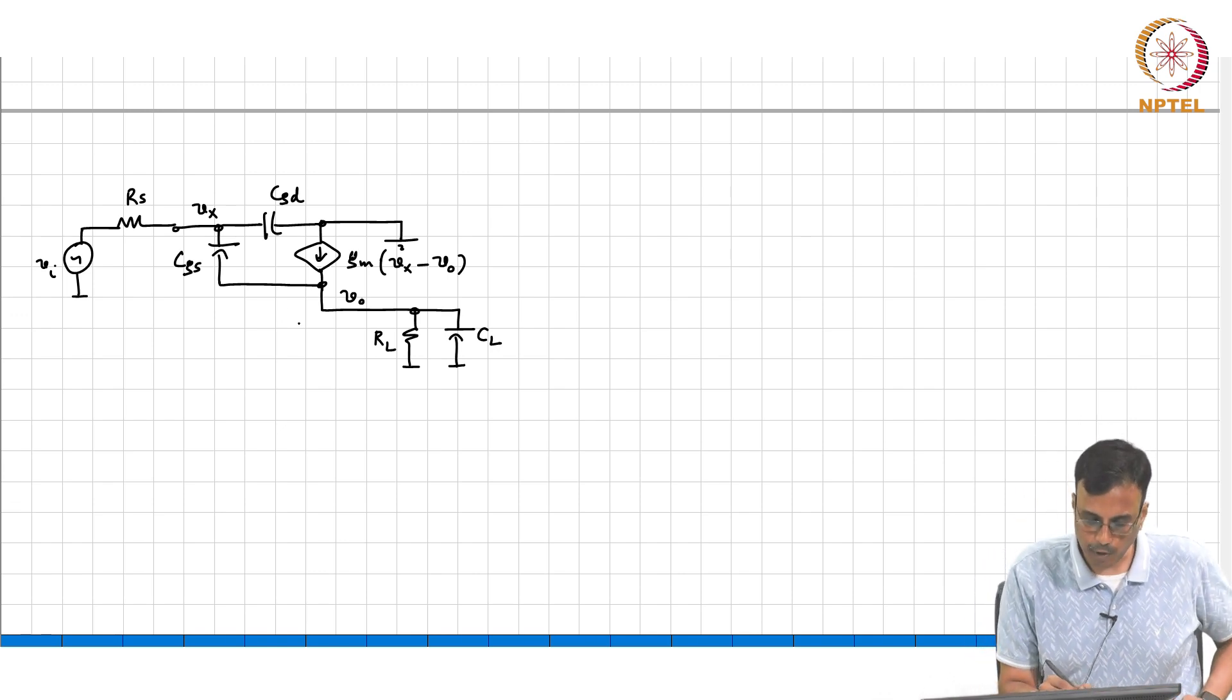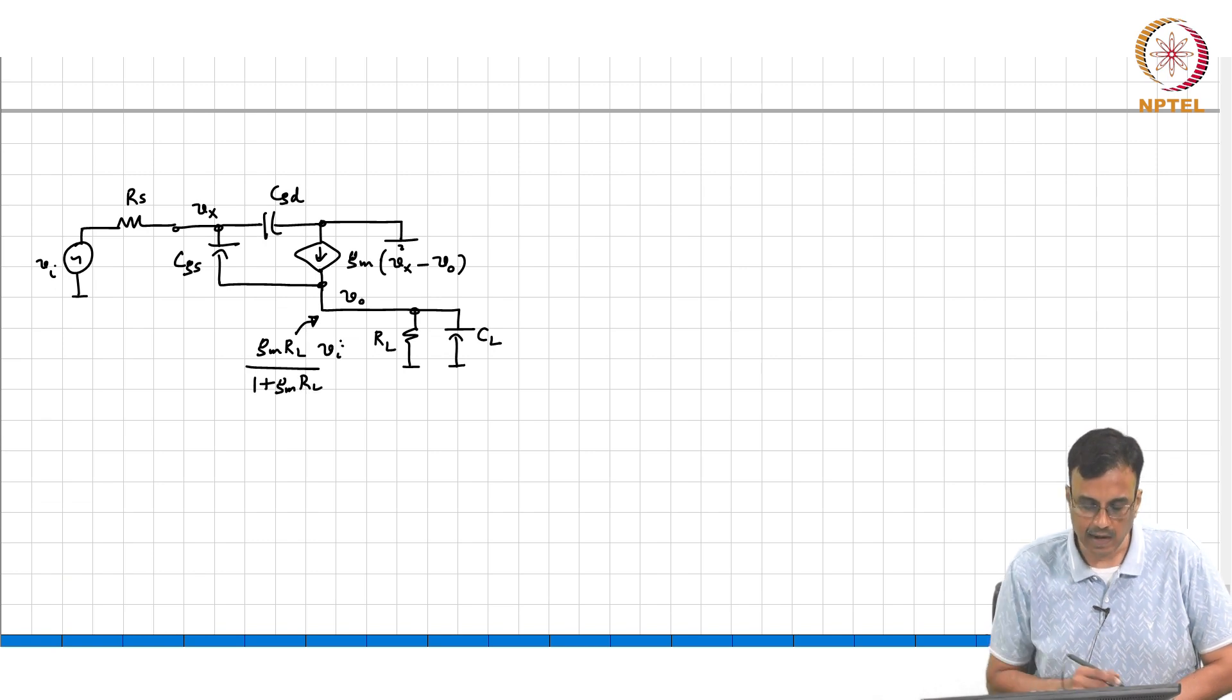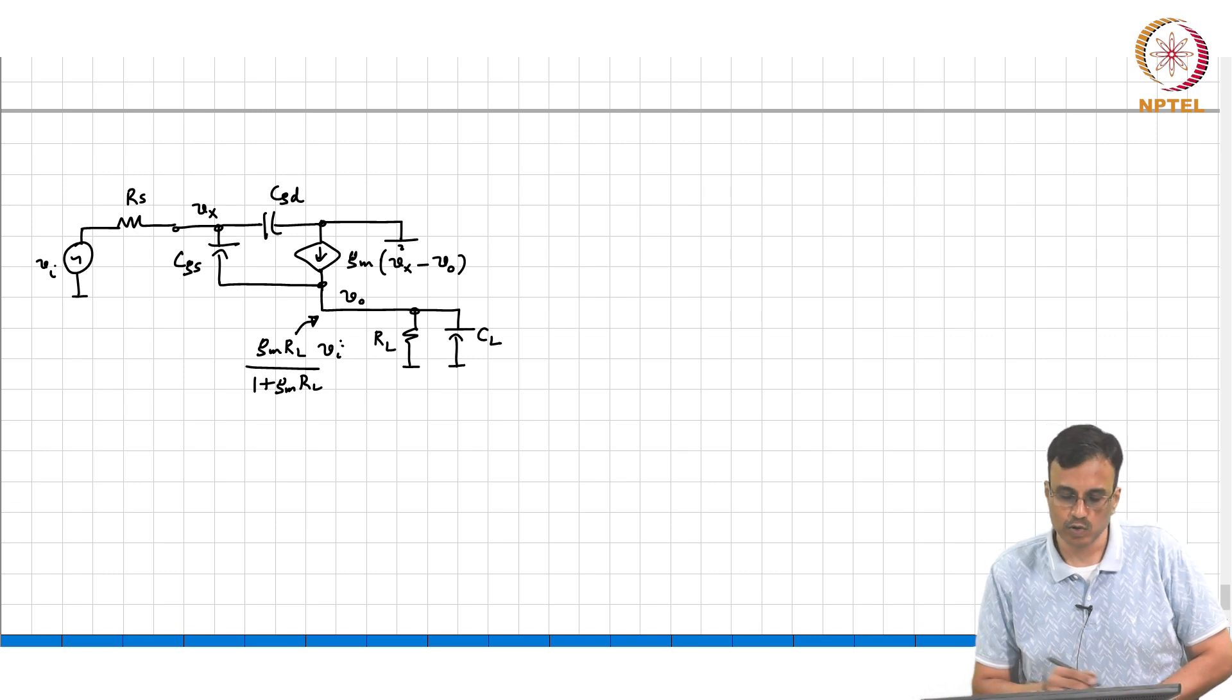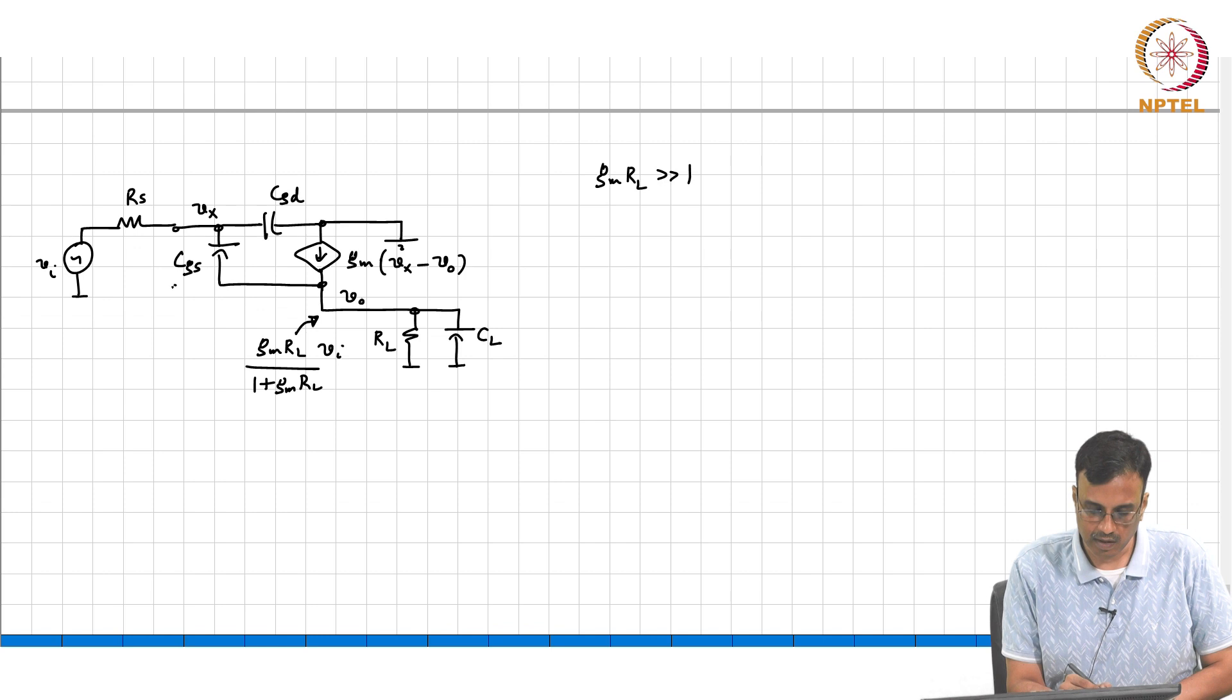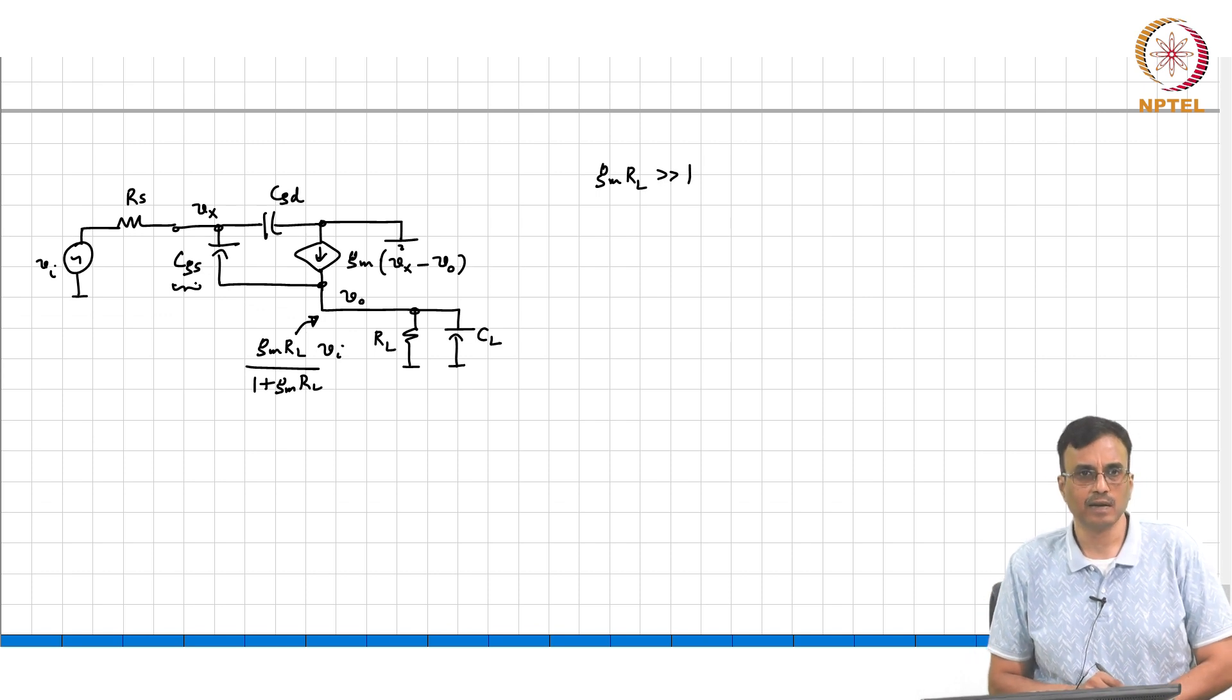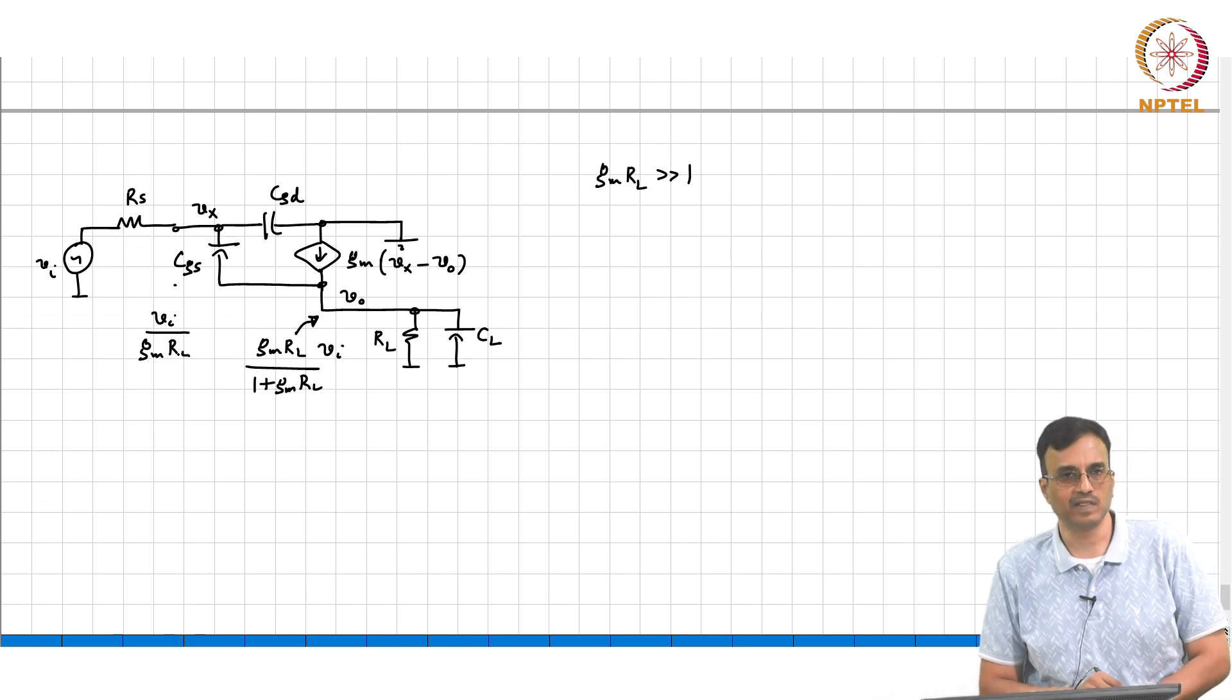What is VO approximately at low frequency? Approximately GM*RL over 1 plus GM*RL times VI. Remember for a good common drain amplifier, usually GM*RL is much much larger than 1. So what comment can you make about the voltage across the CGS? The voltage across CGS is approximately VI over GM*RL. It is actually 1 plus GM*RL, but one is small compared to GM*RL.